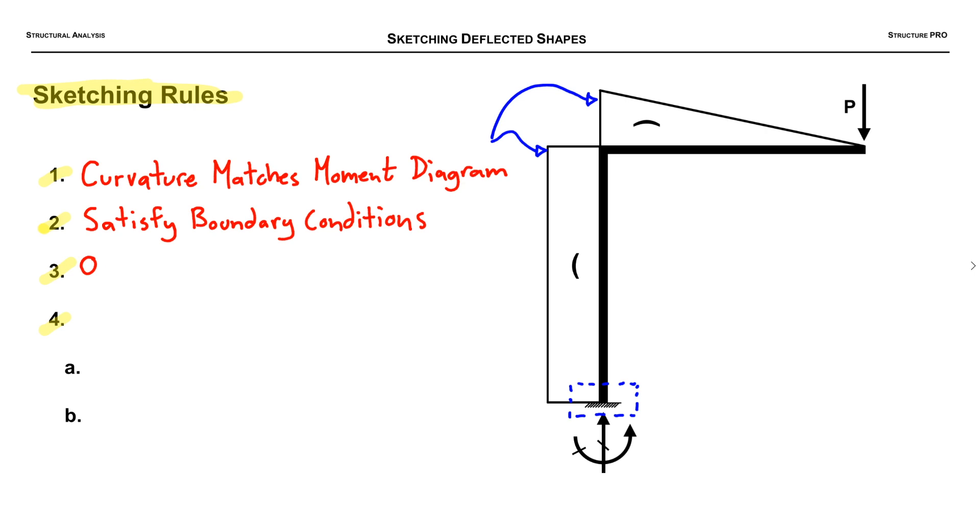We're going to need to make sure that the angle remains 90 degrees indicative of a fixed boundary condition. The third rule here is very similar. Our original angles, our rigid angles that is, they need to remain the same. They can't change. If it's a hinge the angle can change but if it's a rigid angle it must remain unchanged and in our case this 90 degree angle here has to stay 90 degrees.